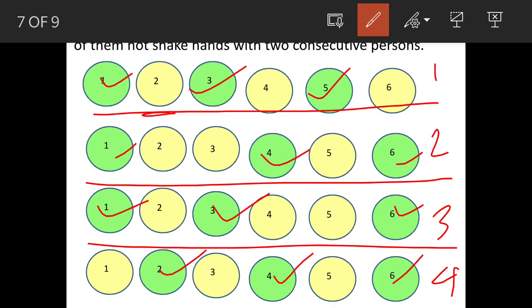Here you see every alternate he is leaving one person, but here he has left two people. This is allowed because the question says no two consecutive people, that means there can be more than two also. Understanding this is very important.